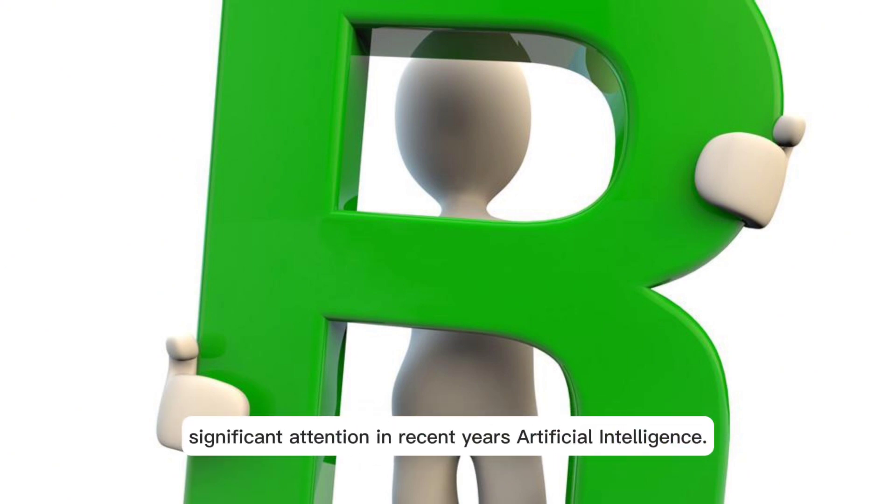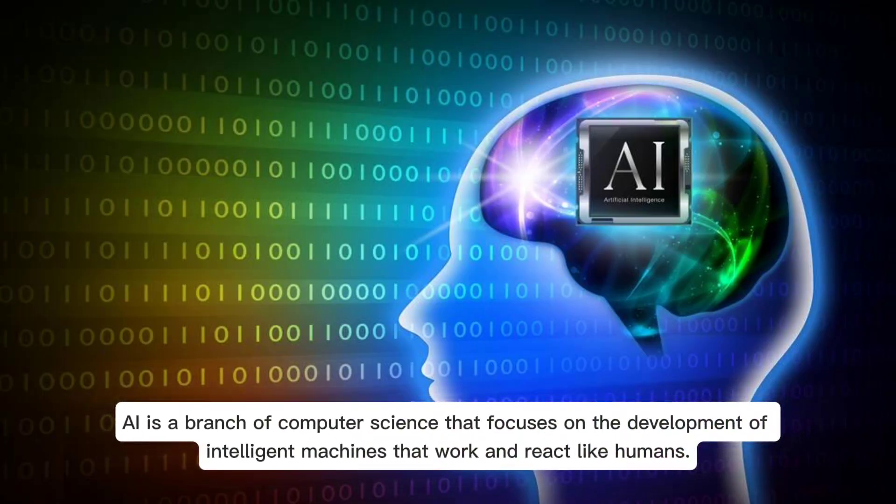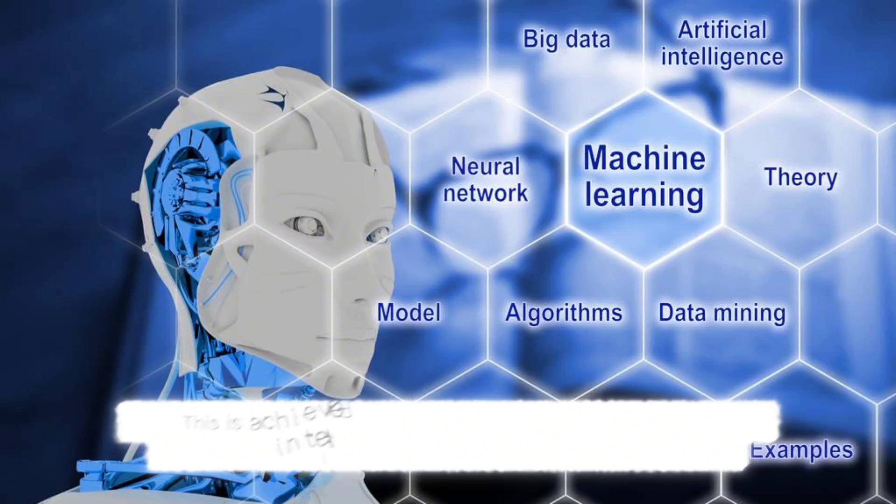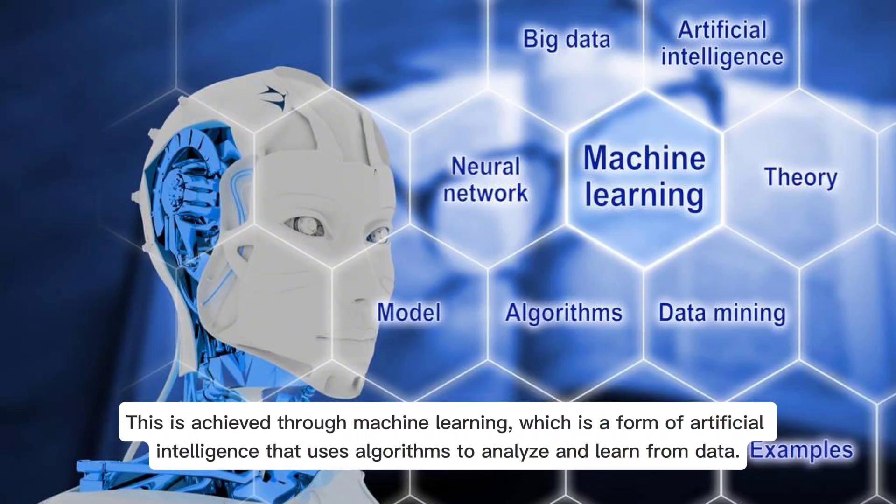AI is a branch of computer science that focuses on the development of intelligent machines that work and react like humans. This is achieved through machine learning, which is a form of artificial intelligence that uses algorithms to analyze and learn from data.